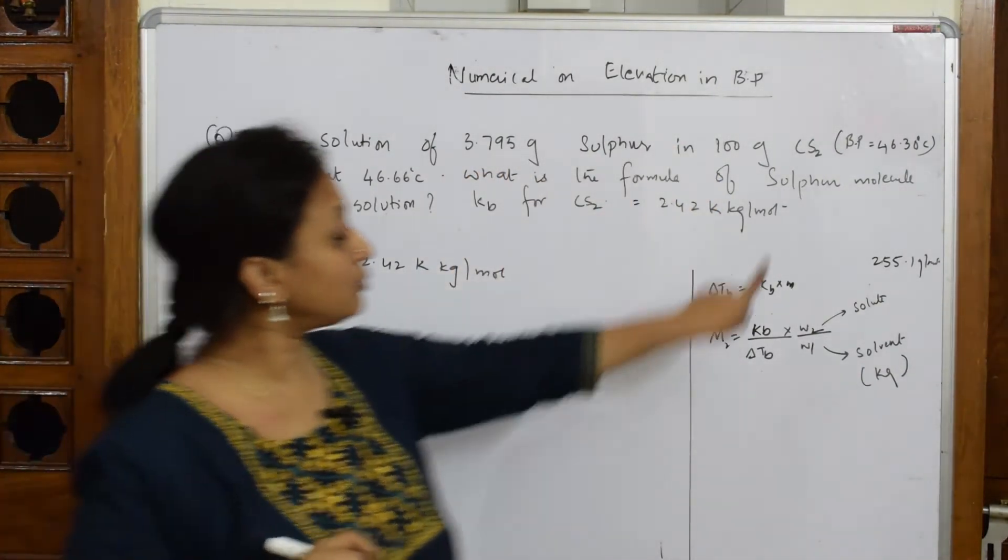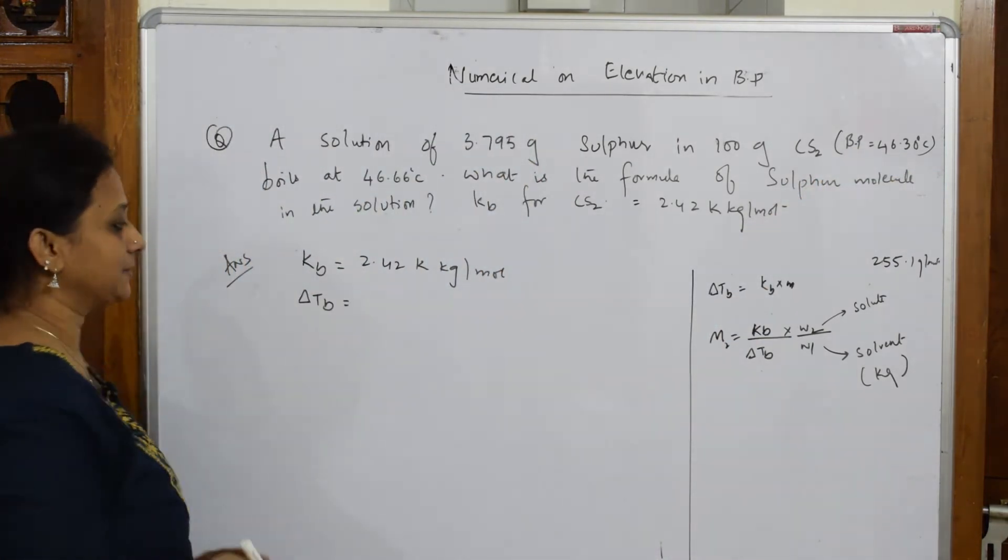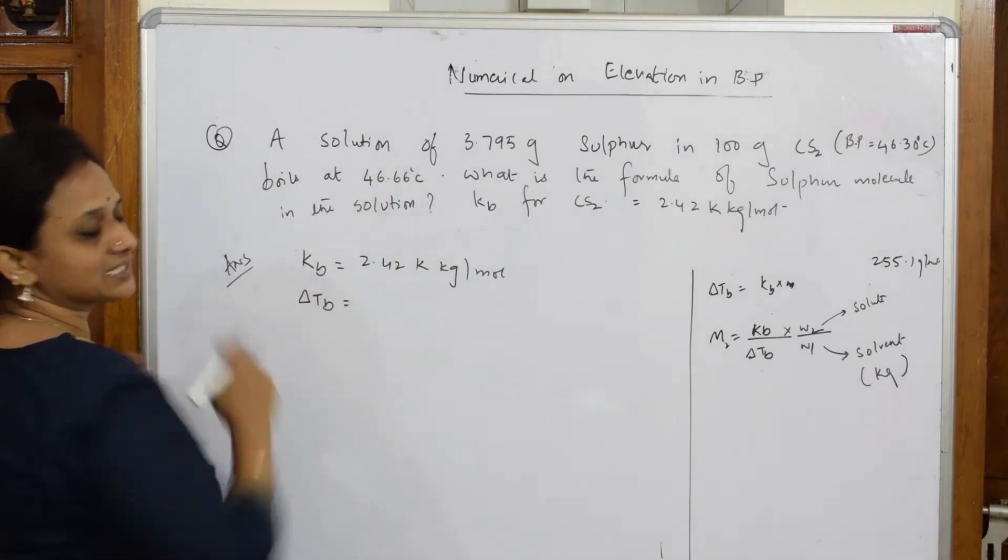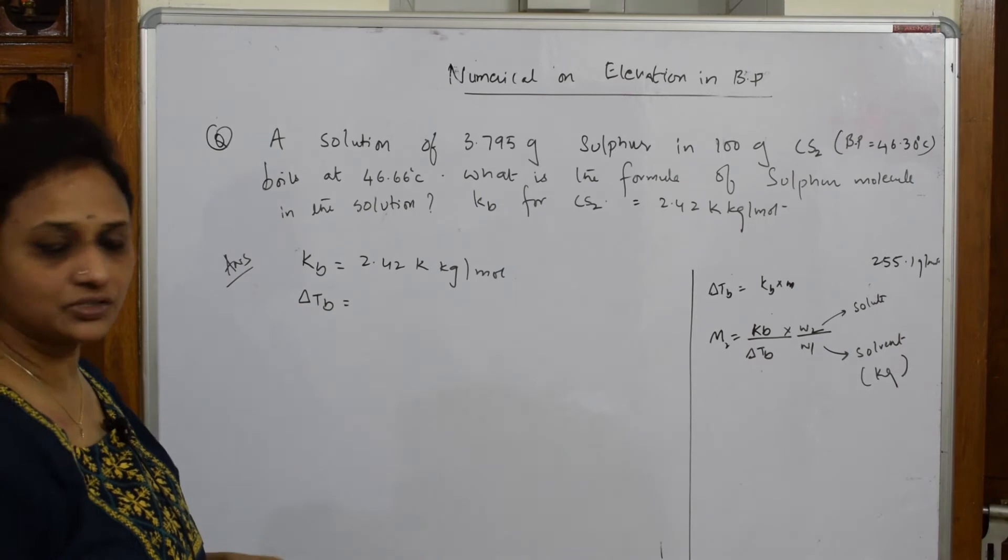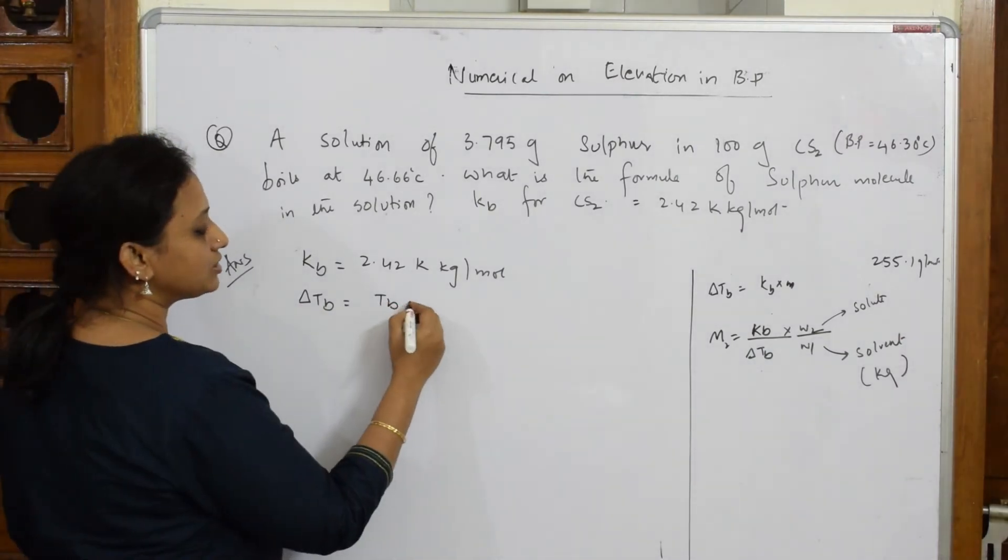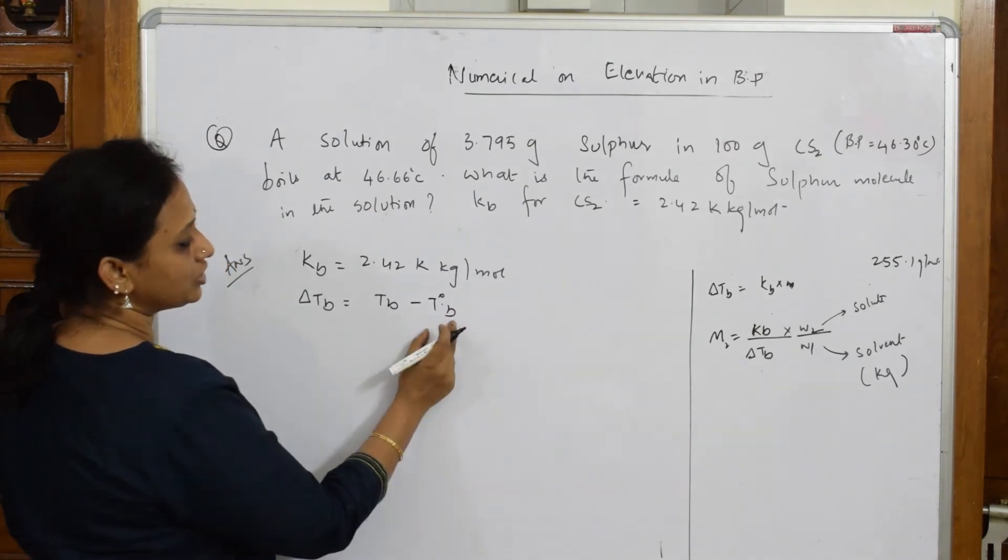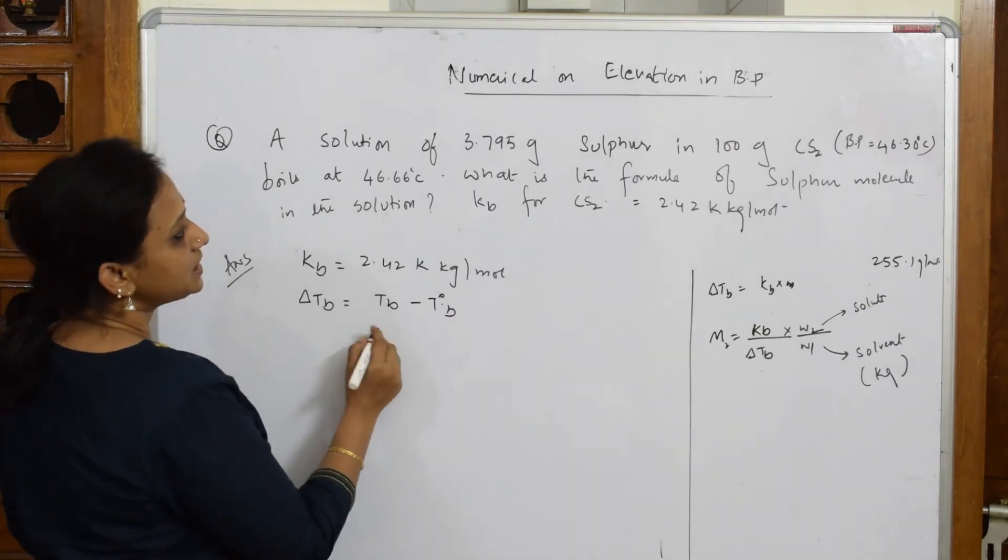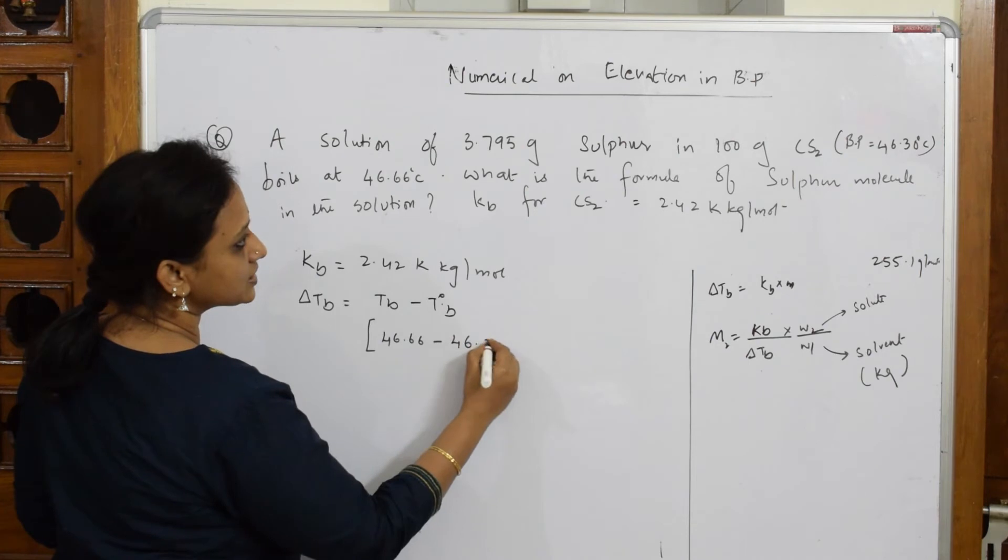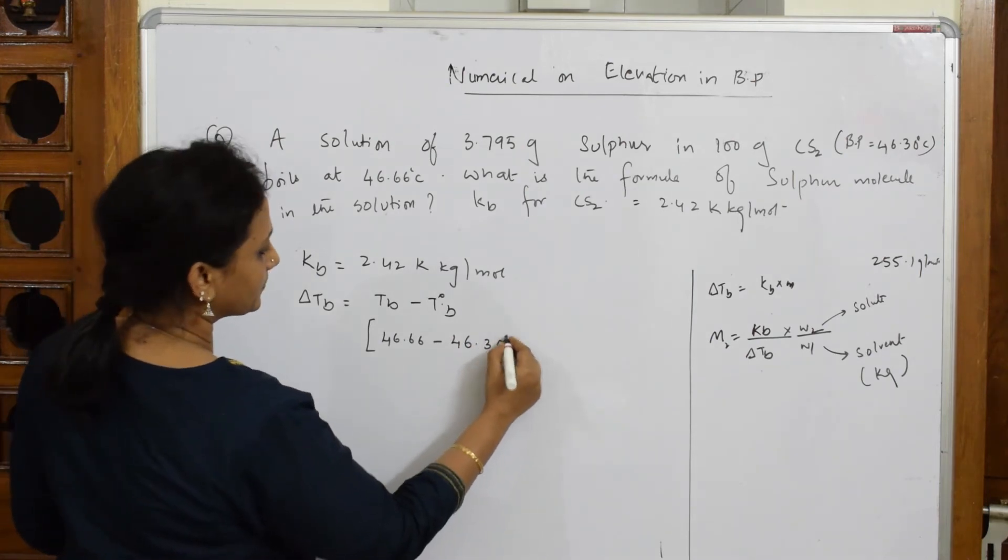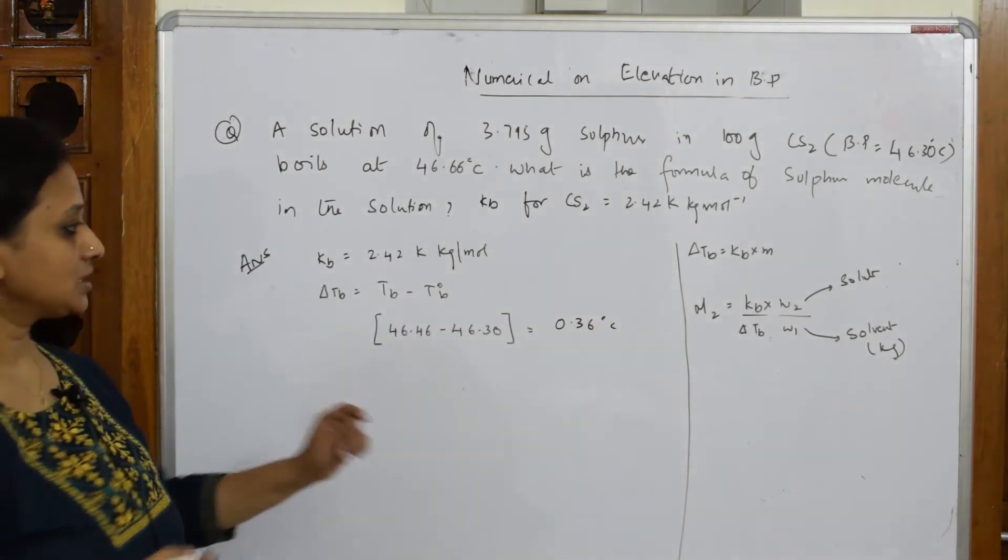They said boiling point of carbon disulfide is 46.30, okay, the basic thing, and boils at 46.66. Yes, so what do they give me? They've given me two temperatures. One, actually I know delta Tb is equal to Tb minus T0b. So now this Tb value and T0b both are given to us. Tb given to us is 46.66 minus T0b given to me is 46.30. This comes to 0.36 degrees. So delta Tb is over.